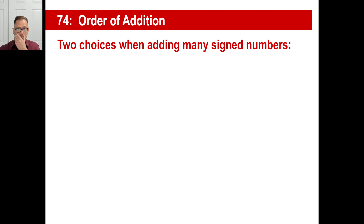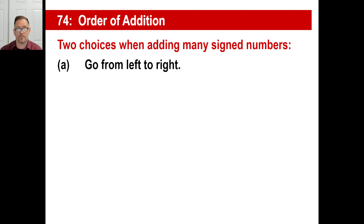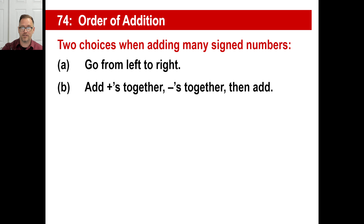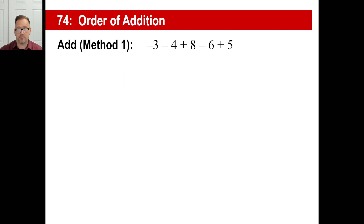Now you can do this in two ways. Anytime you add a bunch of signed numbers, either you can just go from left to right like we just did — that's a fine way — or you can lump together all the positive numbers in one chunk and all the negatives in one chunk, and then just do one final addition or subtraction problem. Pick one of those. Let's try method one — let's just go left to right.